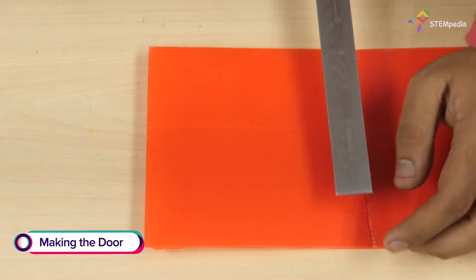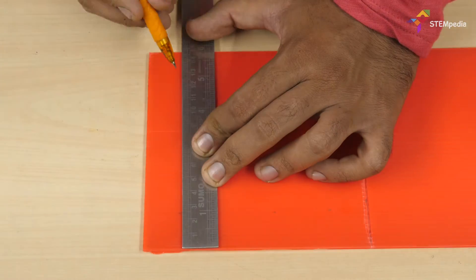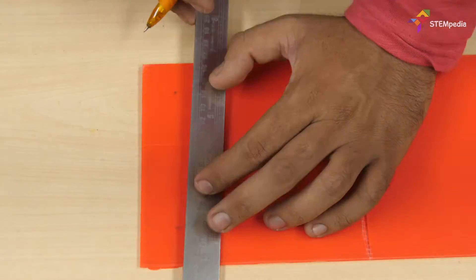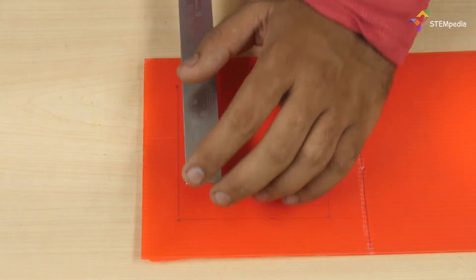Now let's give the locker a door. Draw a square of 10x10cm on the front side of the locker. Cut along the three sides of the square.